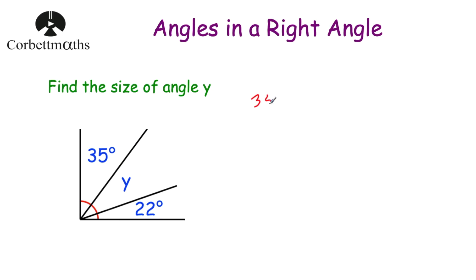So let's do 35 plus 22. 5 plus 2 is equal to 7, and 3 plus 2 is equal to 5. So these two angles add together to be 57 degrees.